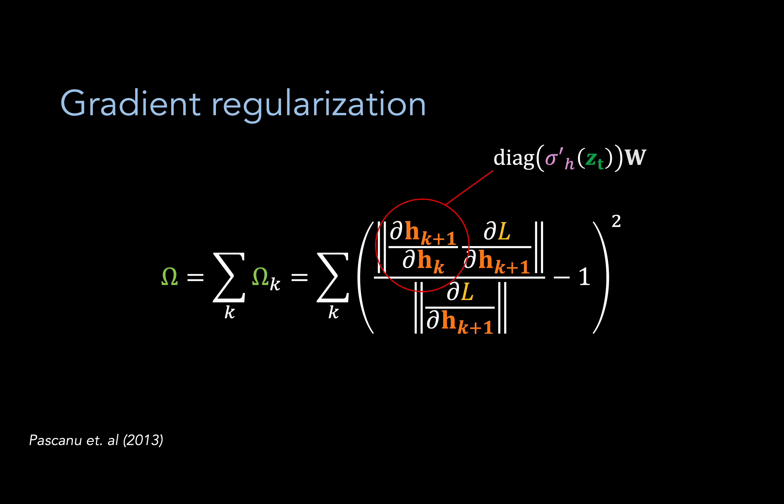Another solution is to add a regularization term to the overall loss function. What this regularizer does is it basically encourages the model to preserve the norm of the gradient as it travels back in time. For some time step k, the only way for the summation term to be 0 is for this fraction here to be equal to 1, which means that multiplication by omega does not actually change the size of our gradient vector.